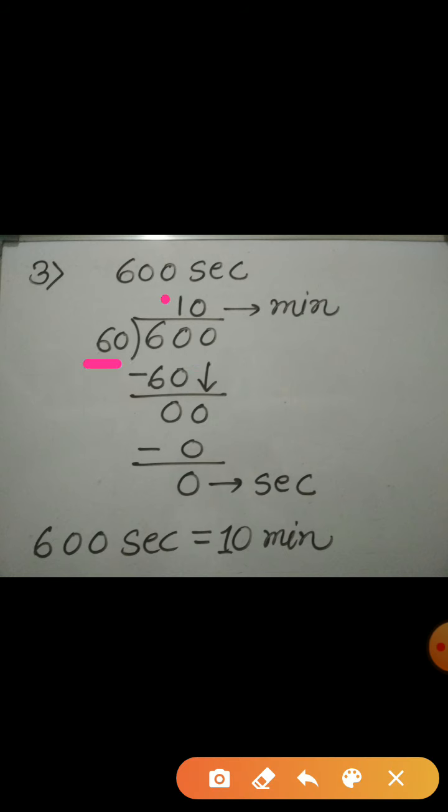Now, 60 ones are 60. 60 minus 60, 0. Then, last digit, 0 will come down. Now, 60 into 0, 0. And, 0 minus 0, 0.